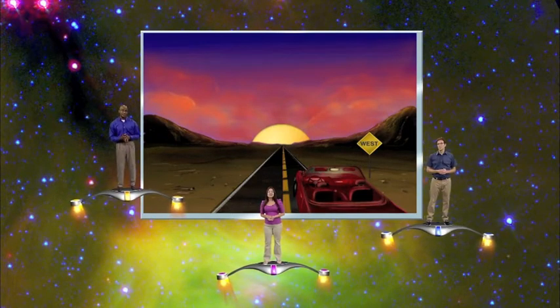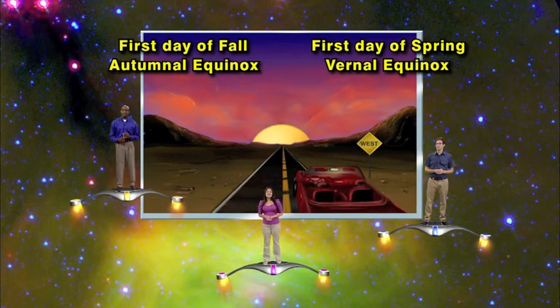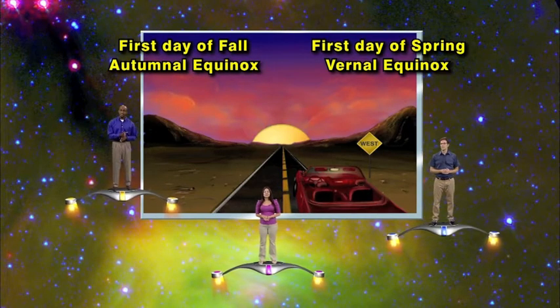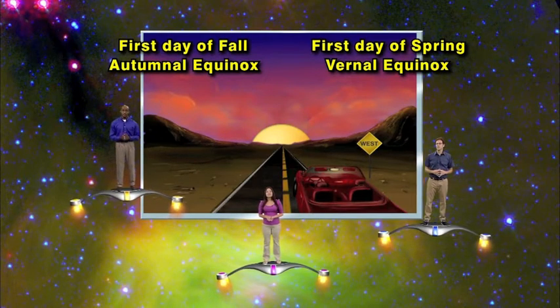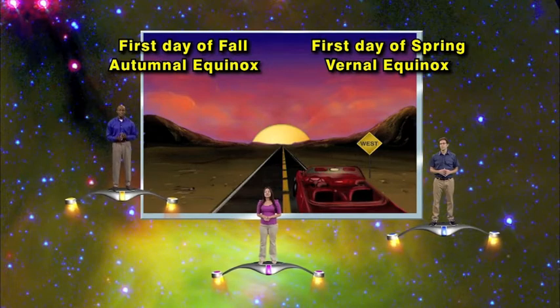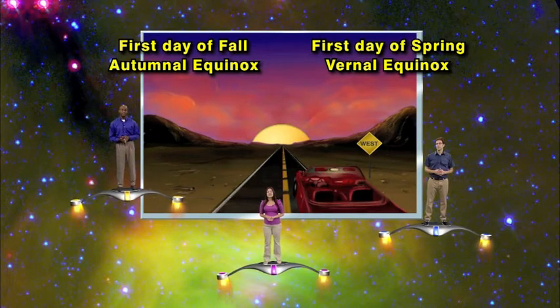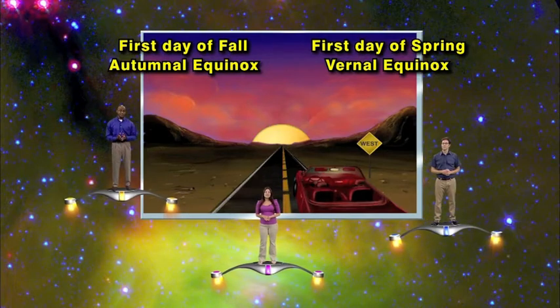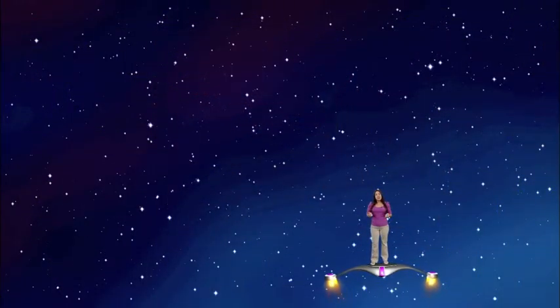Now, although the sun rises due east and sets due west on these two days only, nevertheless, for about a week centered on the first day of autumn and the first day of spring, the sun rises and sets so close to due east and due west that driving due east and west at sunrise and sunset can be pretty miserable. So get out your sunglasses and put those sun visors down. But what are the equinoxes anyway?